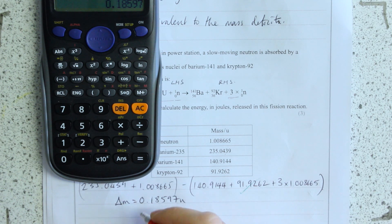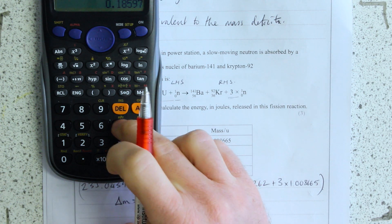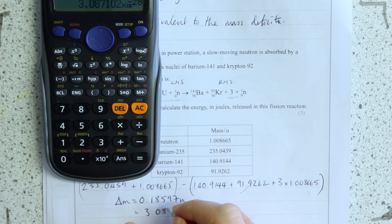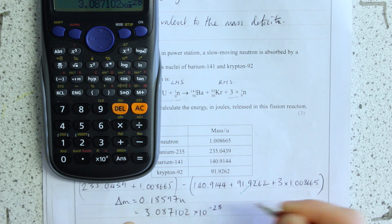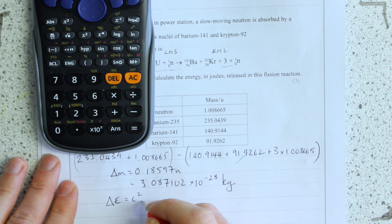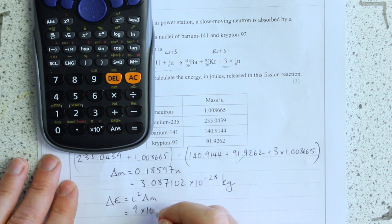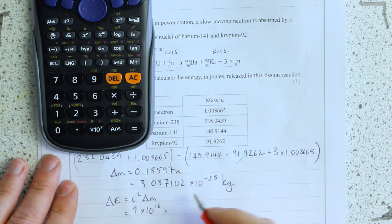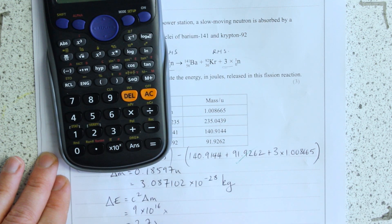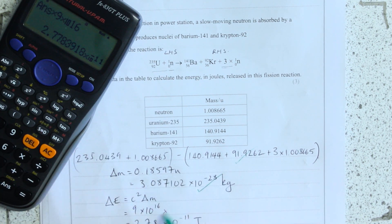On your data sheet you've got the value of 1u, so I just multiply by 1.66 times 10 to the minus 27, giving 3.087102 times 10 to the minus 28 kilograms. Now it's a simple conversion because delta E equals c squared times delta m. Applying that gives the energy in joules. The marks are: the mass deficit in u, conversion to kilograms, and then use of the equation.